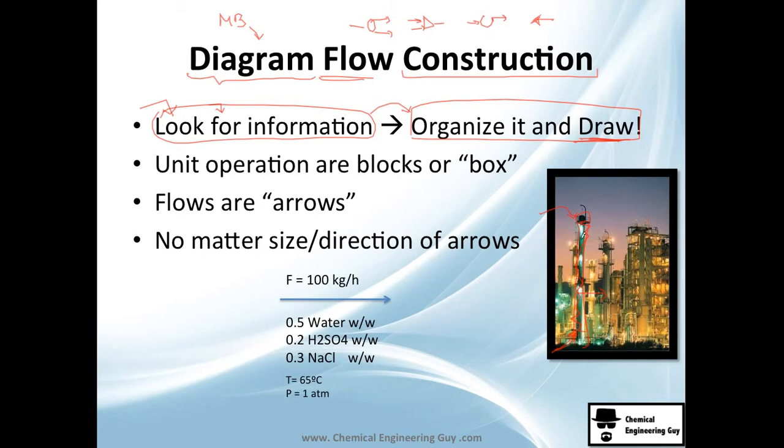We're going to treat these unit operations - this distillation unit or dehydrator or whatever - as boxes which represent unit operations. The flows or streams will be the arrows showing the direction of the flow. It doesn't matter the size or direction of the flow. If you connect one arrow to a box, you're saying it is going inside. If you connect an arrow disconnected, you are having an outlet.